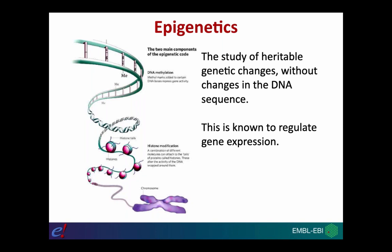The other branch of epigenetics is the modification of histones. DNA is wound around proteins called histones, and these histone proteins can be post-translationally modified with many different types of modifications, such as methyl groups, acetyl groups, ubiquitin, and sumoylation. This pattern of post-translational modification can affect the expression of the genes in the area where that histone is located.